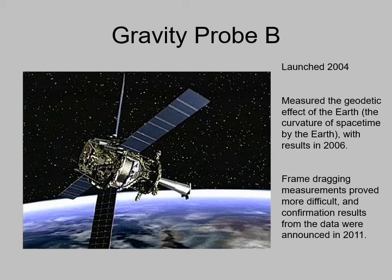Measuring this distortion of space due to a rotating object applies not just to black holes — the Sun rotates, the Earth rotates, and they also distort space. NASA launched a spacecraft called Gravity Probe B back in 1994, and within a couple of years it was able to measure the curvature and distortion of space due to Earth's gravity. It took another five years of data analysis to confirm a tiny bit of frame dragging due to Earth's rotation, verifying that the relativistic effects from the Kerr metric really do happen.